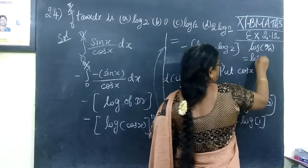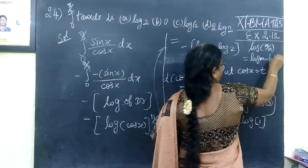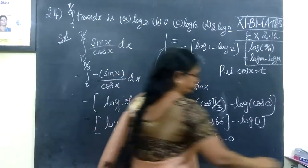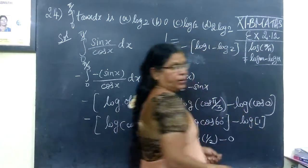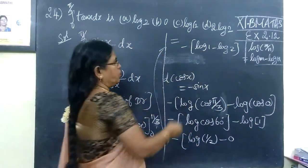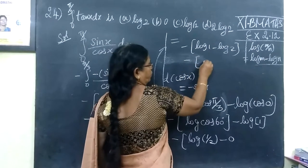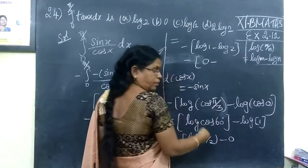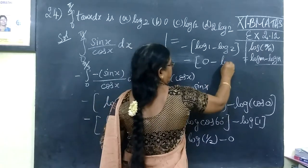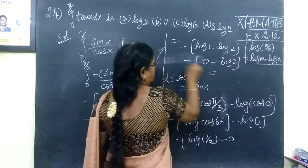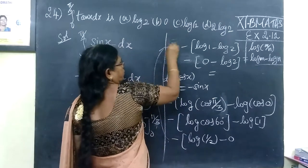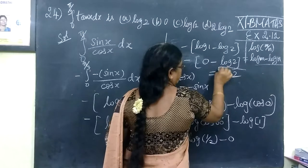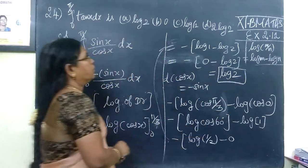This equals 0 minus log 2, which is minus log 2. Then minus times minus gives us positive, so the answer for this is log 2.